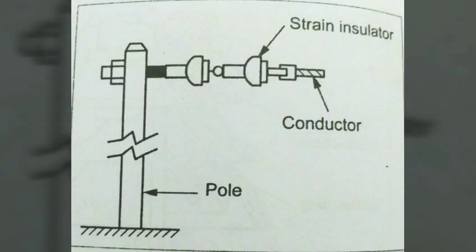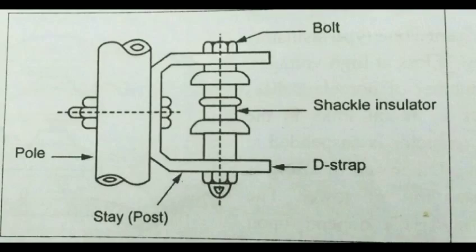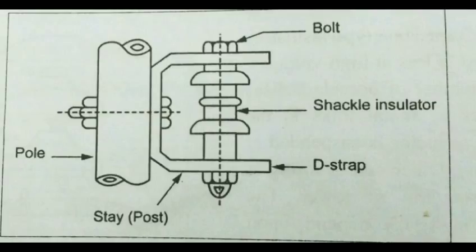Next, shackle insulators or spool insulators. In earlier days, shackle insulators were used as strain insulators, but nowadays they are used for low voltage distribution lines up to 230 volts. Such insulators can be used either in a horizontal position or in a vertical position. They can be directly fixed to a pole with a bolt or to the cross arm. The conductor in the groove is fixed with a soft binding wire.